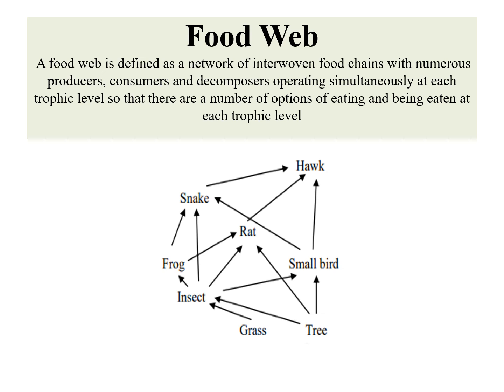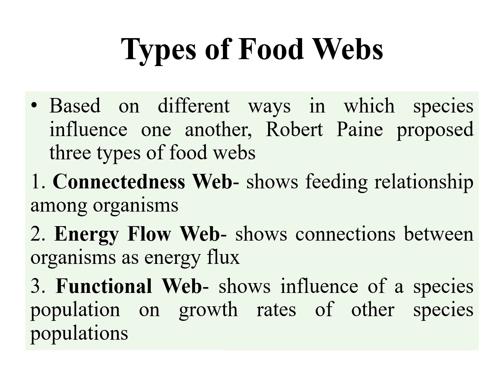A food web is a network of interwoven food chains with various producers, consumers, and decomposers, which are operating simultaneously at each trophic level. There are a number of options of preys as well as predators for a single species in a food web. Food webs are also of three types, which were given by Robert Payne — the famous person who also gave us the concept of keystone species, which we'll talk about in some other lecture.